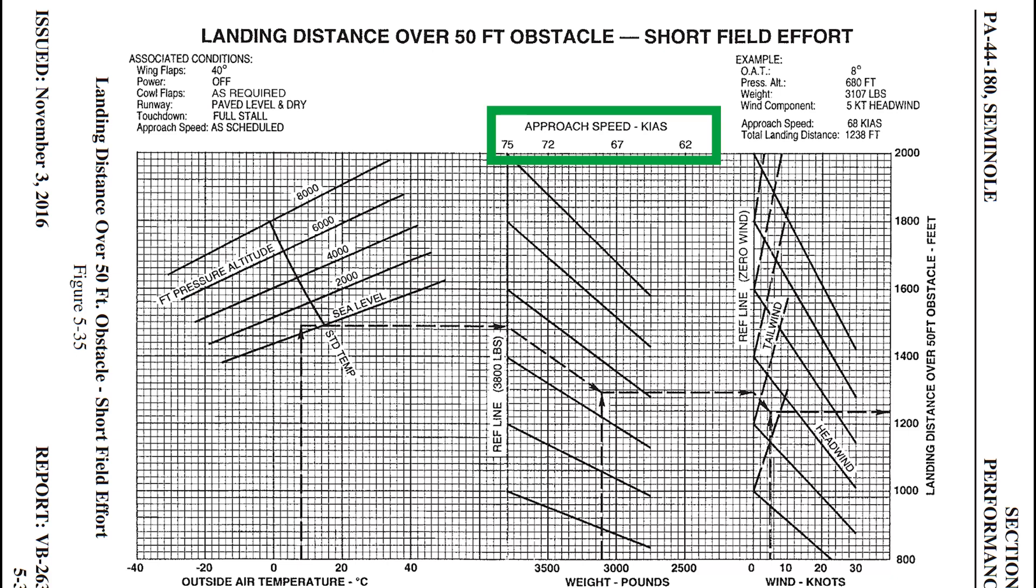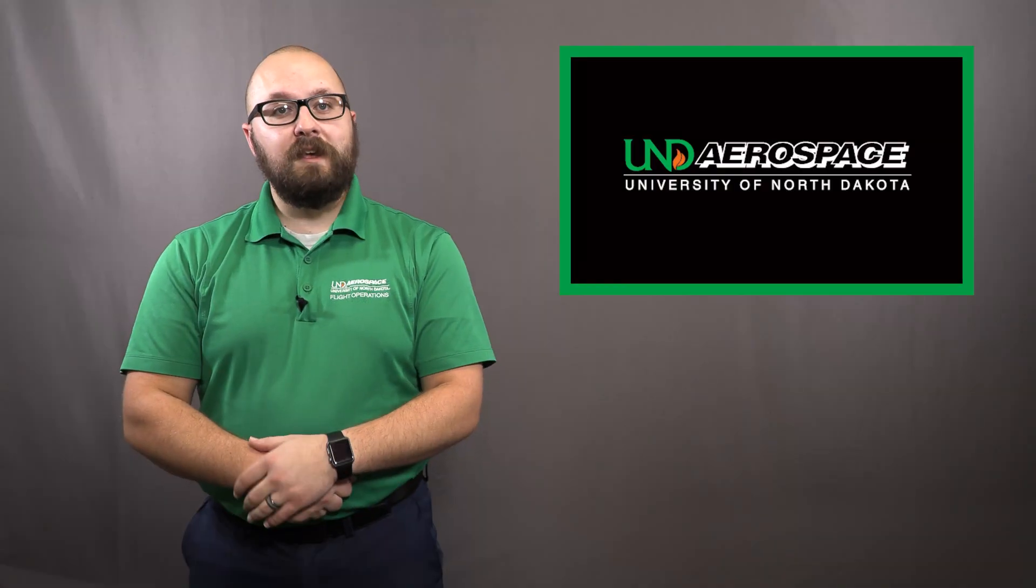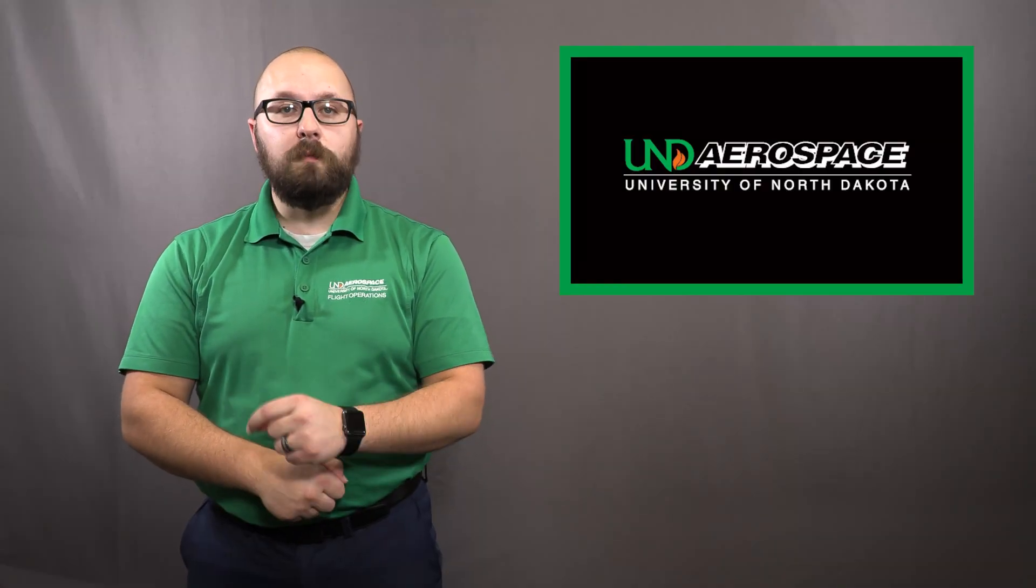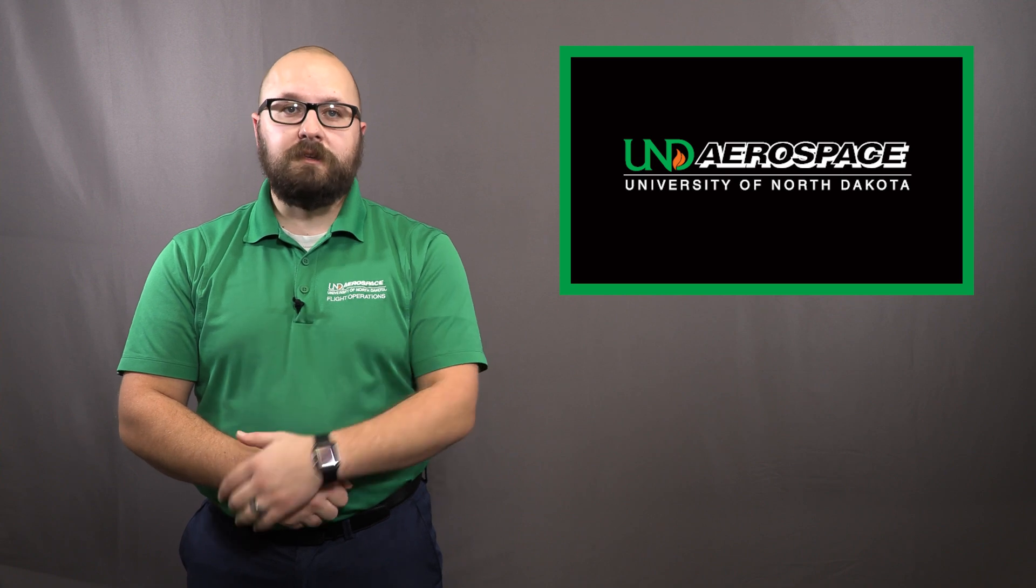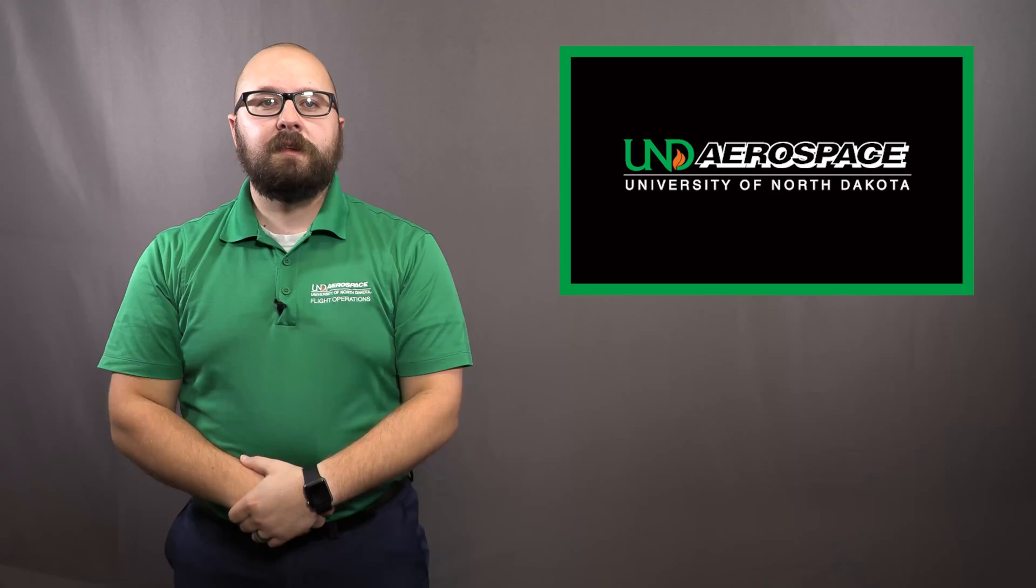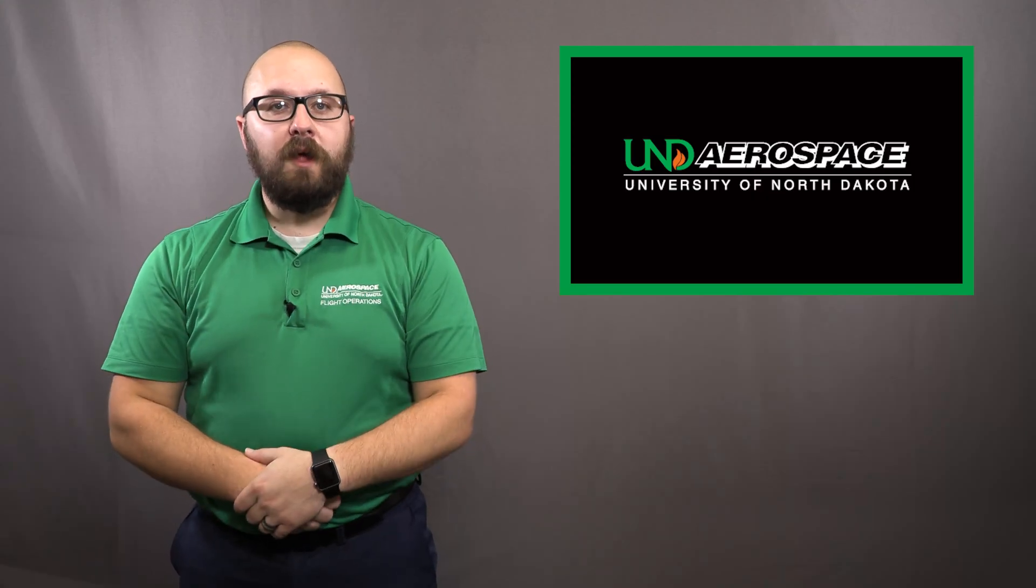If we take a look here, we can see that the Seminole has a published POH approach speed. This is because the Seminole approach speed of 88 knots is 33 knots above VSO. Dissipating that much energy in the roundout and flare is almost impossible, especially when conducting short field landings. We can take this knowledge and apply it to our Archer.